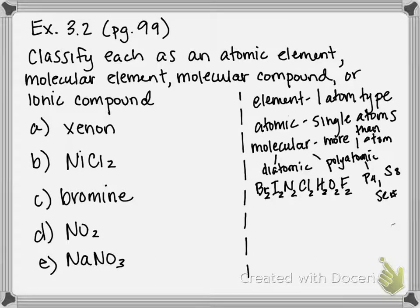So for recap, elements can be sorted into two types, atomic or molecular. If it's an atomic element, its most basic unit is a single atom. If it's a molecular element, its most basic unit is more than one atom, either diatomic or polyatomic.